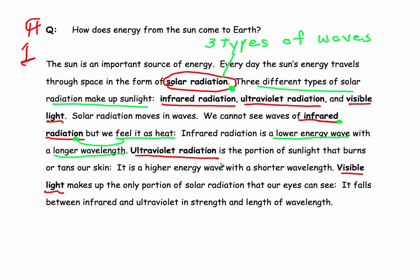Ultraviolet radiation. It's a portion of the sunlight that burns or tans our skin. It's a higher energy wave. It's a shorter wavelength. And then finally, visible light is the part that we can see.